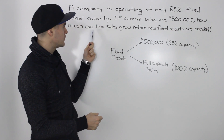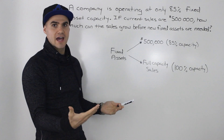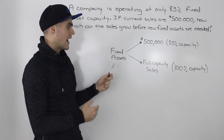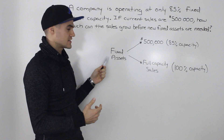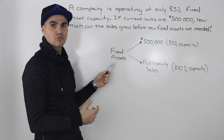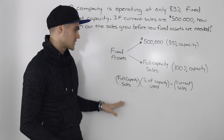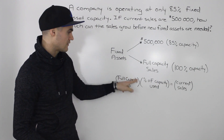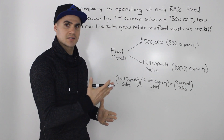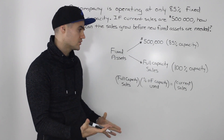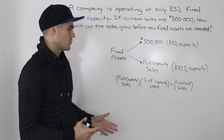Looking at the question — how much can the sales grow before new fixed assets are needed — we want to know how much sales can grow with just the fixed assets we have right now. To find the full capacity sales, we use this formula: full capacity sales times the percentage of capacity currently being used equals current sales. That's a pretty intuitive formula.